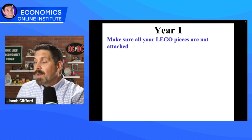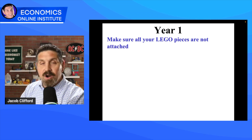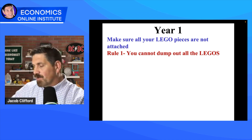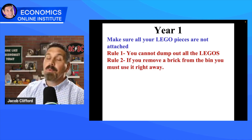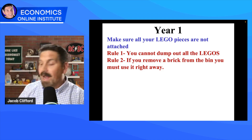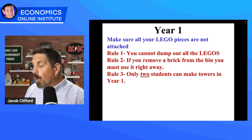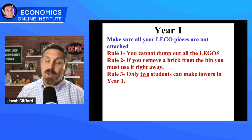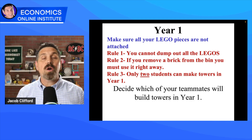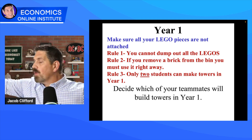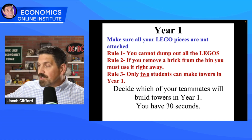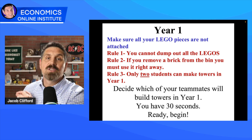Here we go, Year 1. Make sure all the Legos in your bin are not attached. Rule number one: you cannot dump out all your Legos. Also, if you remove a brick from your bin, you have to use it right away — you can't set it off to the side. And last, only two students are allowed to work in Year 1. Decide who's going to work. You have 30 seconds to build as many towers as you can. The rest of you can cheer for your team. Ready and begin.